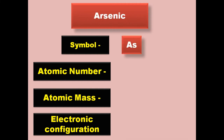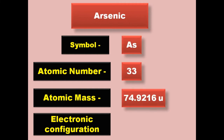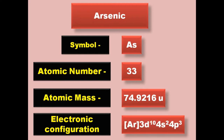Arsenic has symbol As, atomic number 33, atomic mass 74.9216, electronic configuration [Ar] 3d10 4s2 4p3. Arsenic is a metalloid and exists in solid form at room temperature.